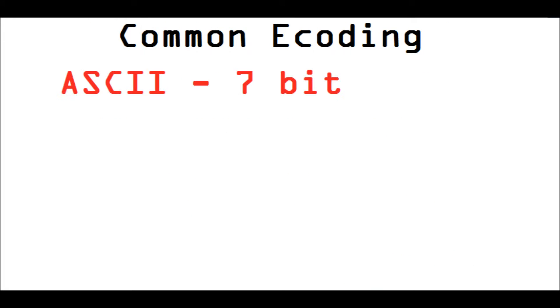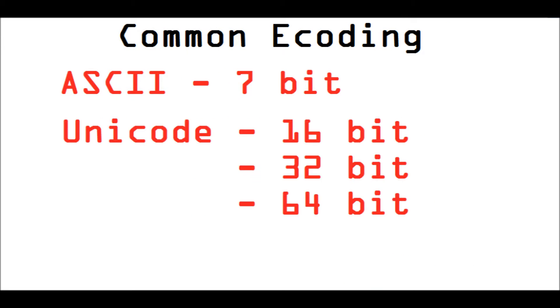Some common encodings include ASCII, which is 7-bit. Unicode, which comes in 16-bit, 32-bit, and 64-bit flavors.